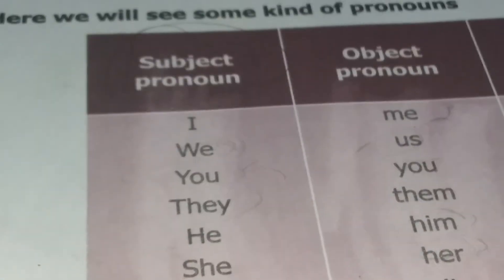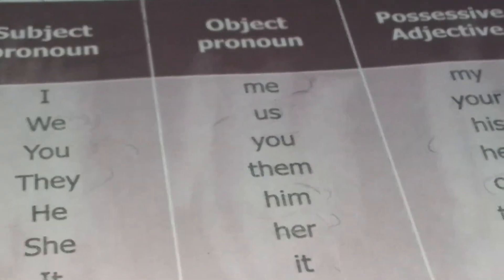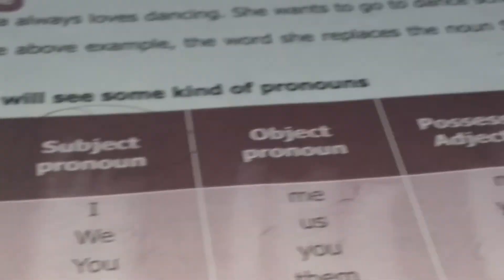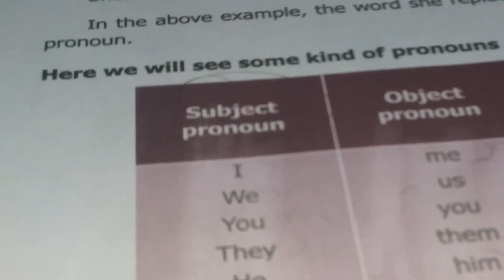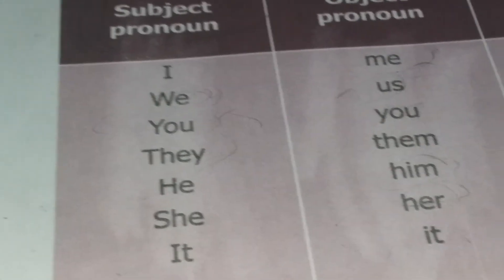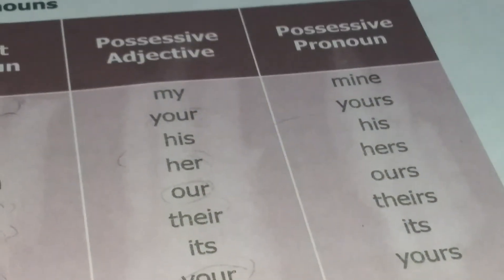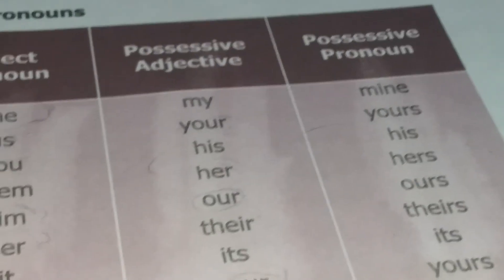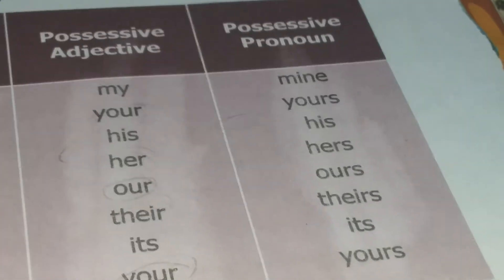While comparing subject pronouns and object pronouns, they are like this: instead of I, they use me; instead of we, us; instead of you, you; they becomes them; he becomes him; she becomes her; it stays it.